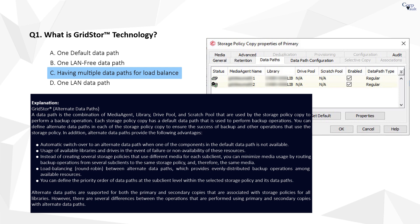By defining multiple paths, the number of storage policies needed within a CommCell environment can be reduced. This will make it easier to manage backup data and help consolidate media usage.